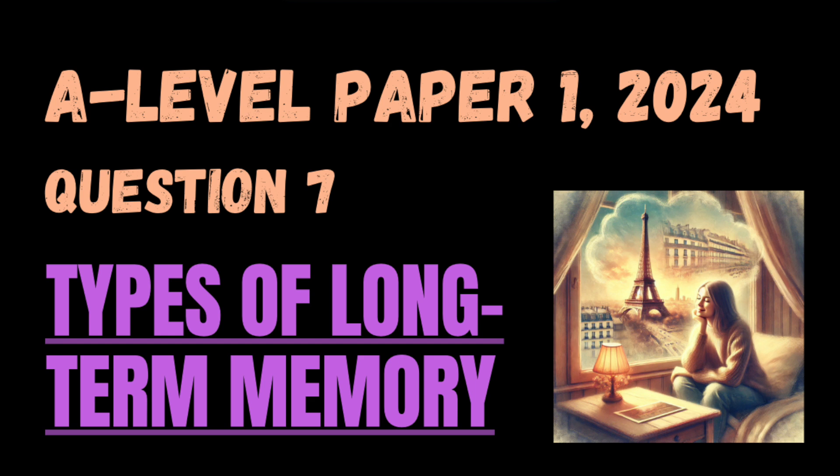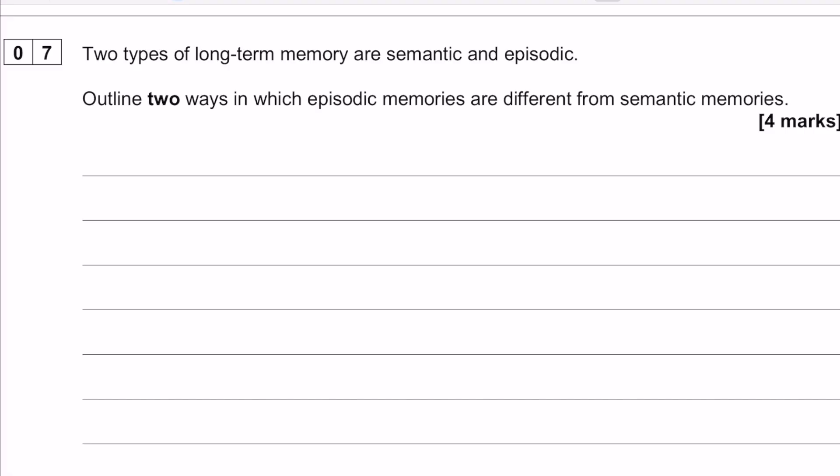This is question number seven in the 2024 paper one, and we are in the memory topic. This question is all about types of long-term memory. It is a straightforward four-marker: outline two ways in which episodic memories are different from semantic memories.